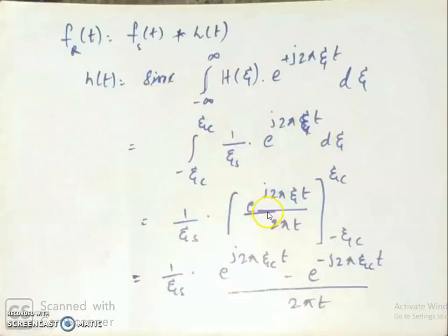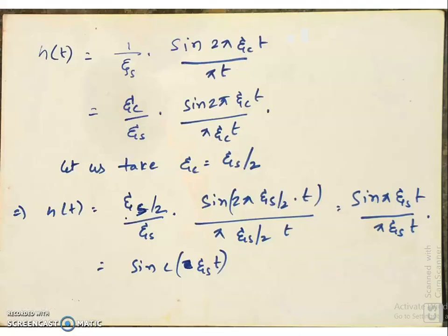Evaluating the integral, h of t equals 1/zeta_s multiplied with sin(2π·zeta_c·t) / (π·t). Rearranging: h of t equals (zeta_c/zeta_s) multiplied with sin(2π·zeta_c·t) / (π·zeta_c·t). Assuming zeta_c equals zeta_s/2, this becomes (1/2) multiplied with sin(π·zeta_s·t) / (π·zeta_s·t/2·zeta_s), which simplifies to sinc(zeta_s·t). So h of t is the sinc function.